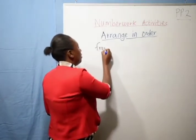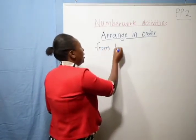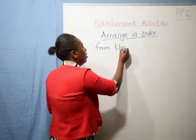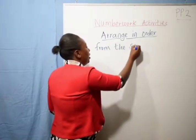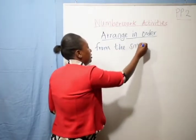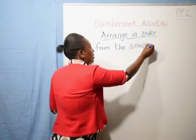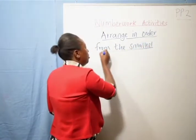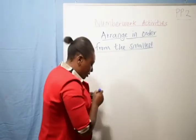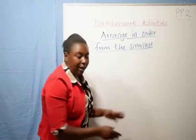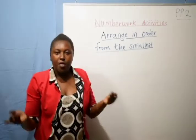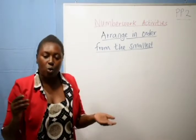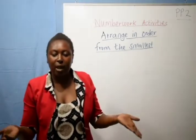From the smallest to the largest number. What do I mean from the smallest? For example, if you take number three and two, which number is the smallest?